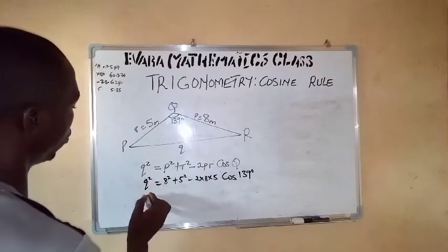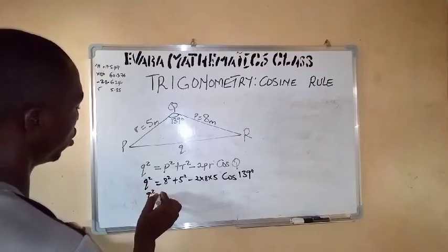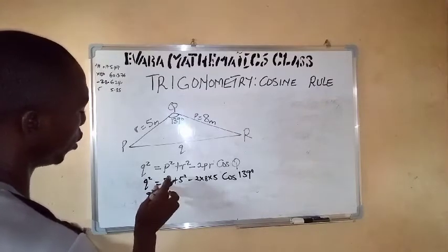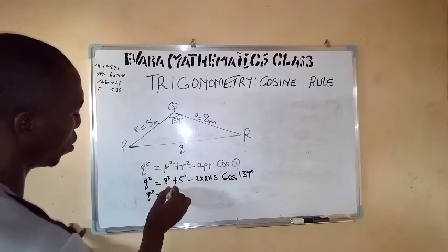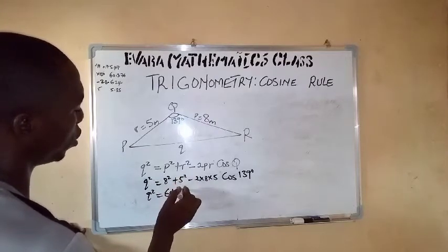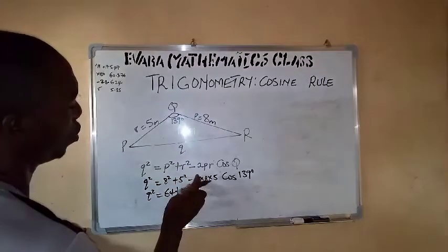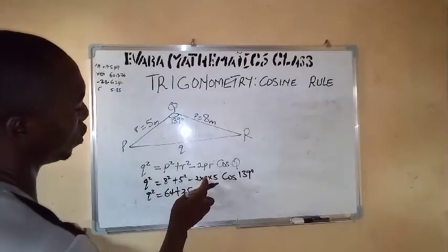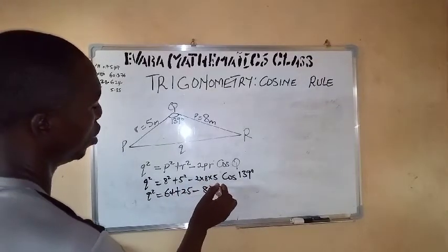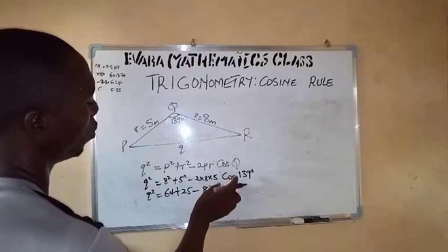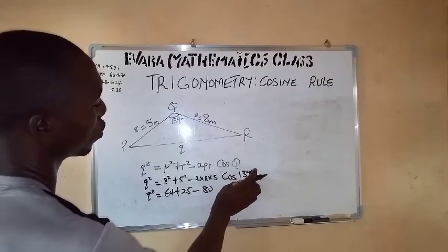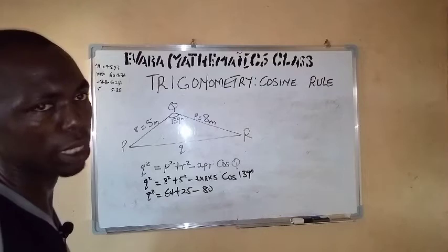So we have q² = 8² is 64, 5² is 25, 2 times 8 is 16 multiplied by 5 is 80, then we have cos 139.